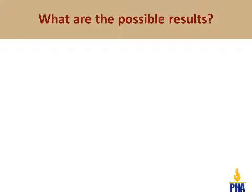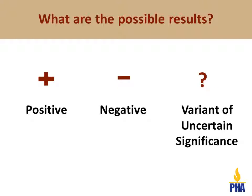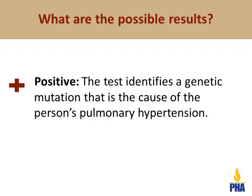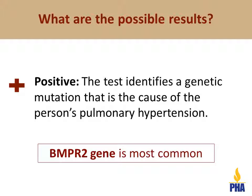There are three possible results of the genetic testing: positive, negative, and a variant of uncertain significance. A positive test result means that we found a genetic mutation that is the cause of the pulmonary hypertension. The most common genetic cause is a mutation in the BMPR2 gene. 7 in 10, or 70%, of families with more than one member with pulmonary hypertension will have a positive genetic test result. 2 in 10, or 20%, of people with idiopathic pulmonary hypertension who do not have a family member with the disease will have a positive test result.